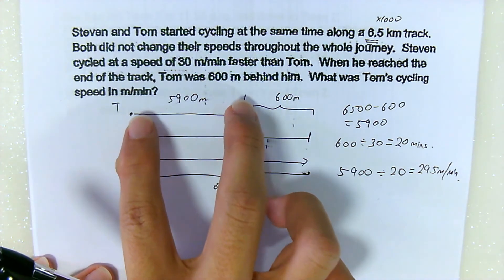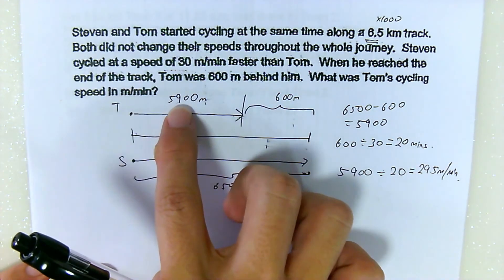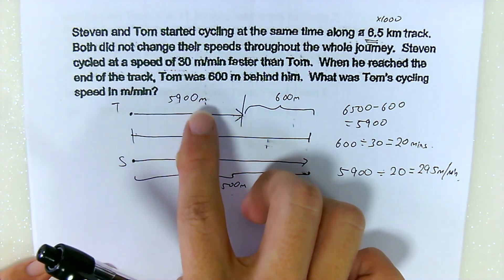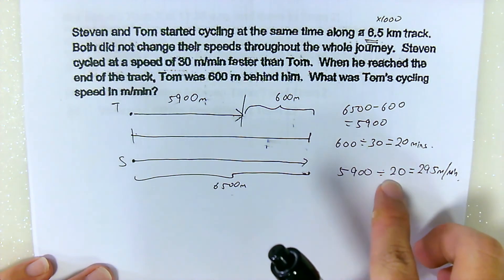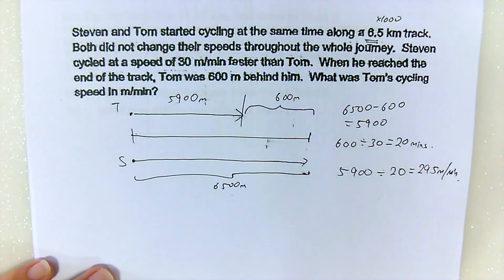So if you take 5,900 divided by the 20 minutes, you get this speed, which is the cycling speed. Done.